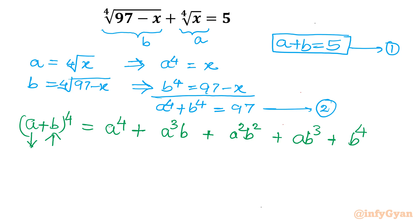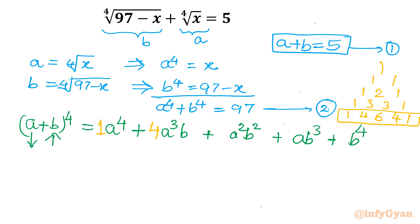Using Pascal's triangle: power 1 gives 1, 1; power 2 gives 1, 2, 1; power 3 gives 1, 3, 3, 1; and power 4 — which is our requirement — gives 1, 4, 6, 4, 1. These are our coefficients for the expansion.